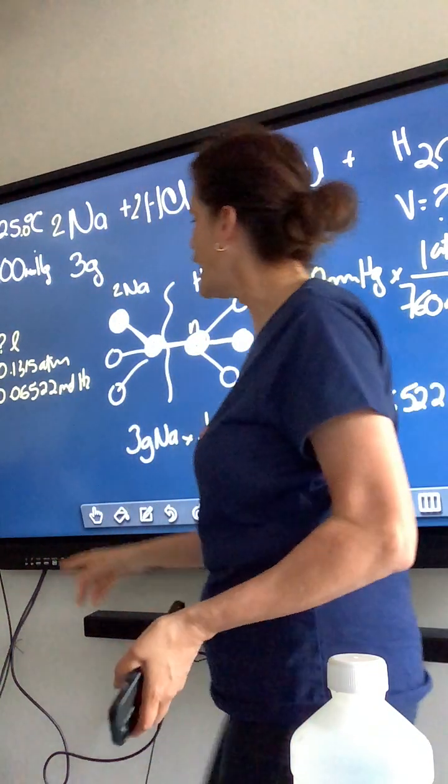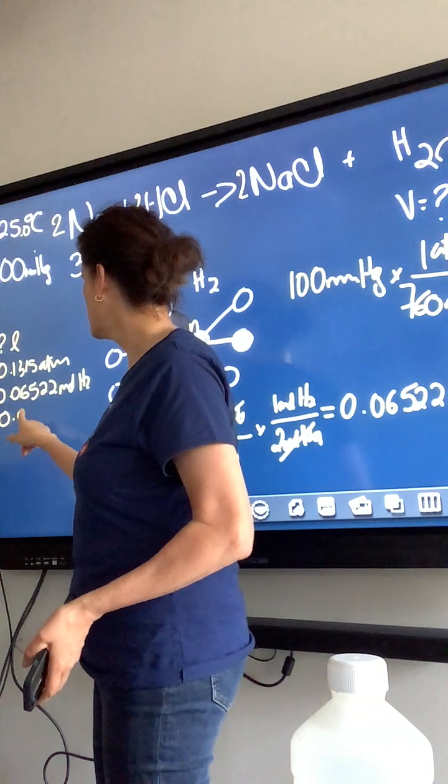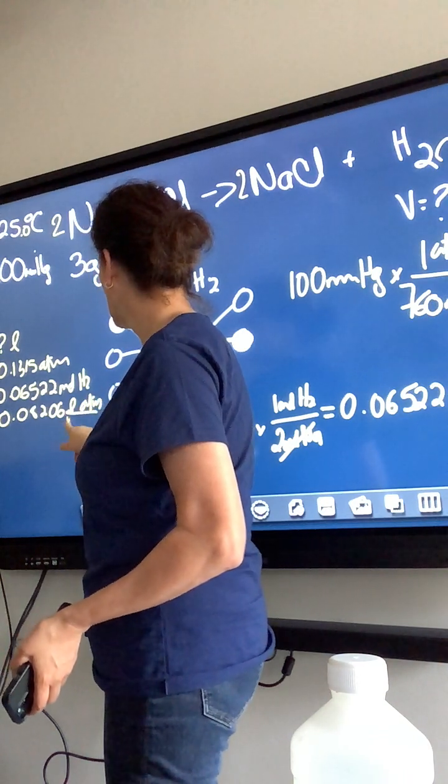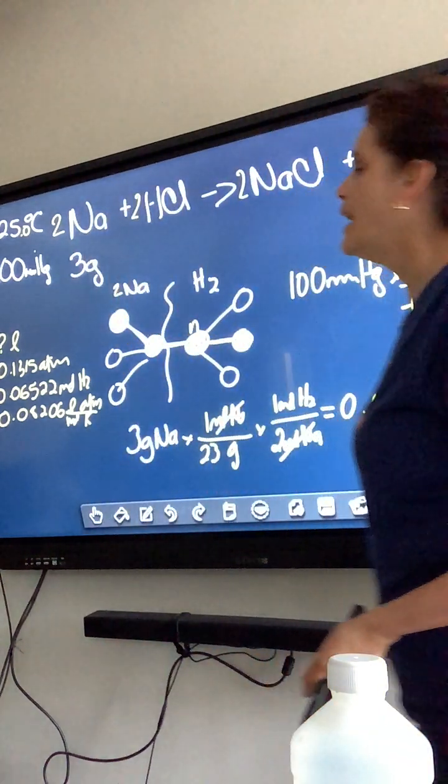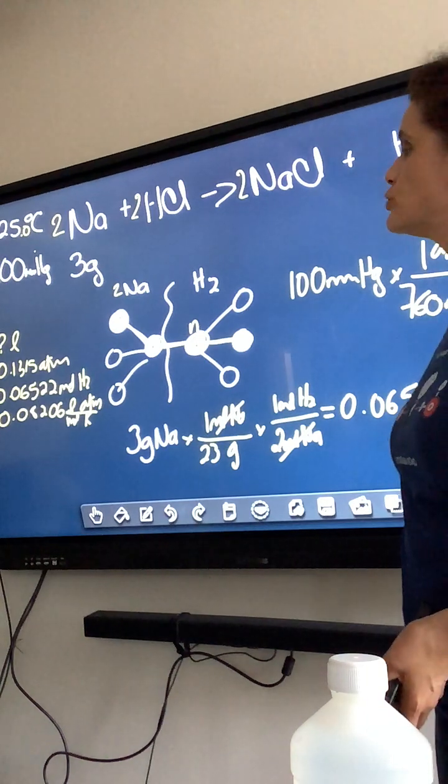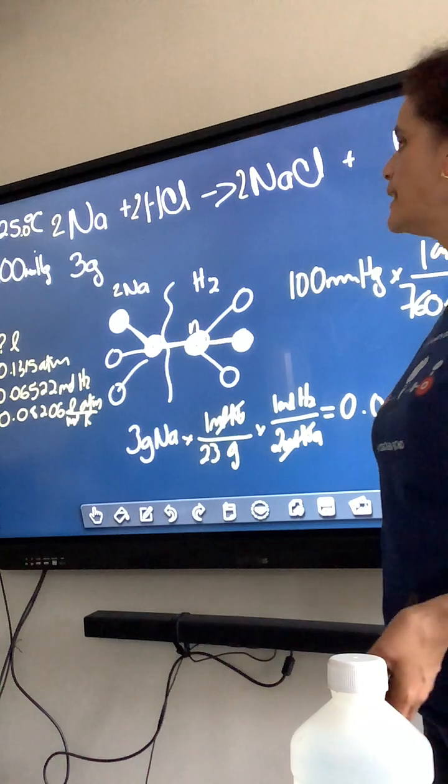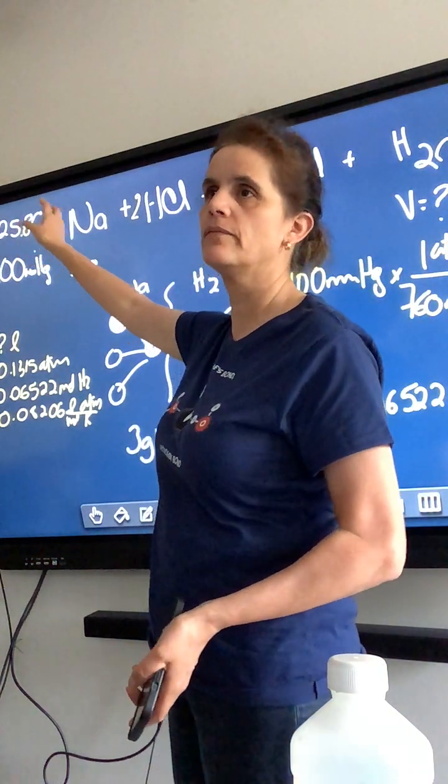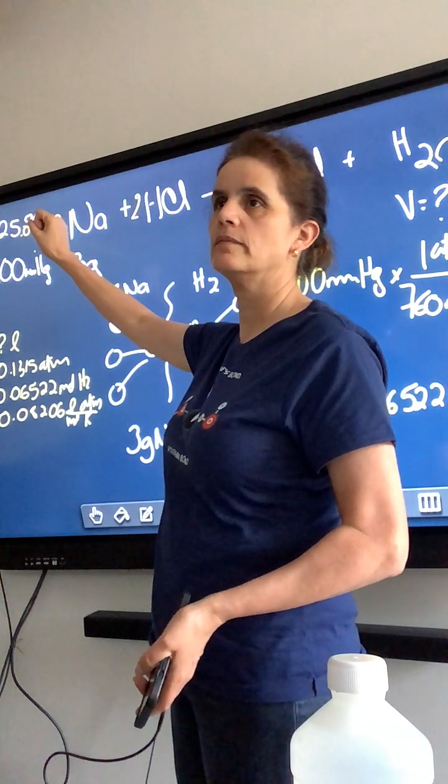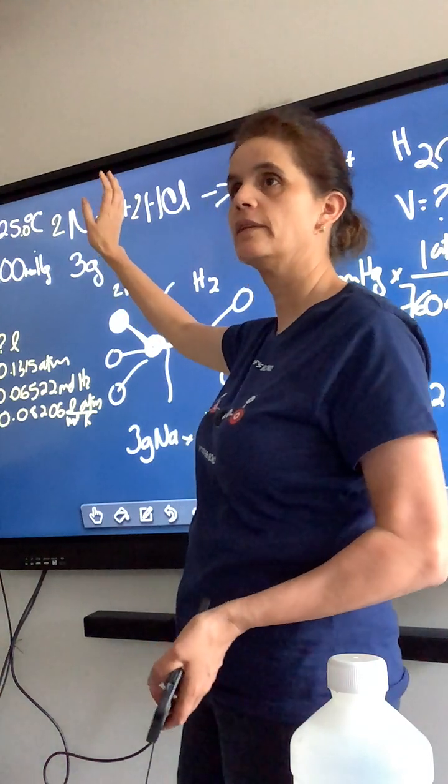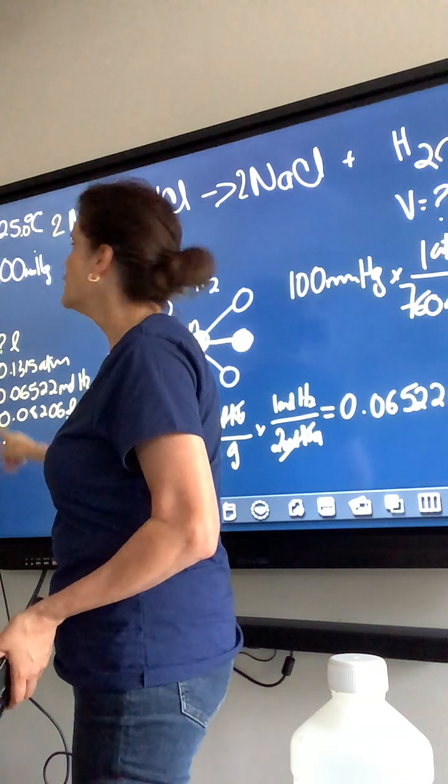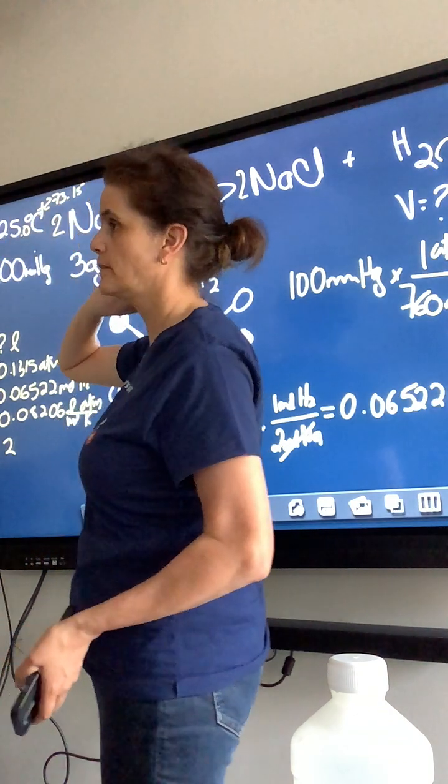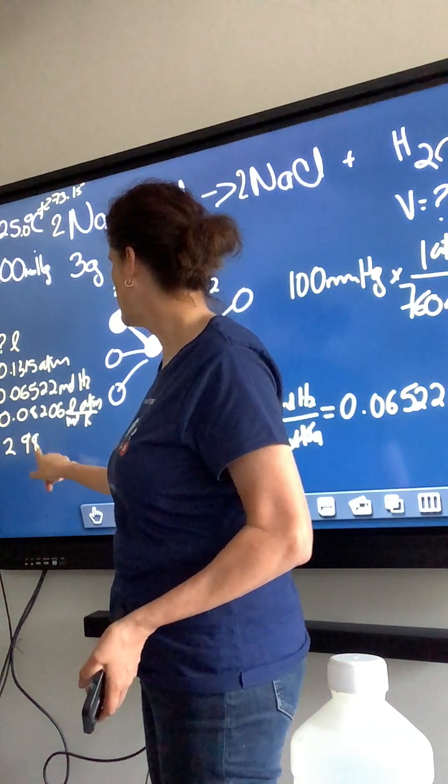So the number of moles I just found, 0.06522 moles of hydrogen. So all of this is for my gas. And has anybody memorized this? 0.08206 liter atmosphere mole kelvin. And the temperature, we said it was 25 degrees C. What is that in kelvin? You add 273.15 to any degree Celsius and you get Kelvin, right?